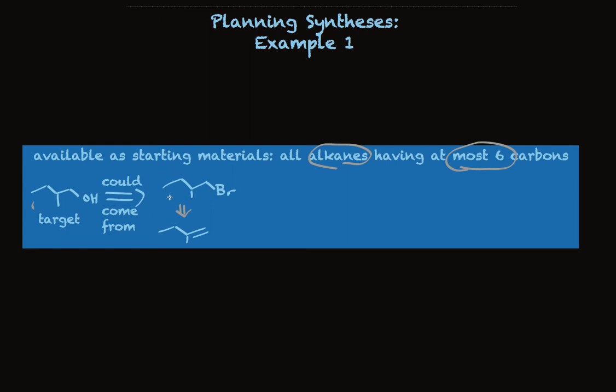So anyway, we've planned our last step. We'll make the primary alcohol from an alkene, or perhaps from a primary bromide. And now we need to plan how to make this alkene.